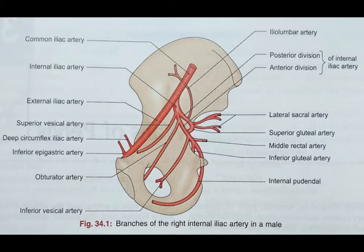The remaining eight branches are from the anterior division: inferior gluteal artery, pudendal artery, umbilical artery, middle rectal artery, vesical artery, obturator artery, uterine artery, and vaginal artery.